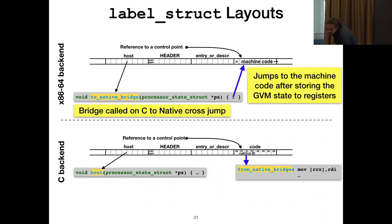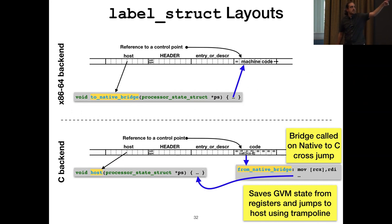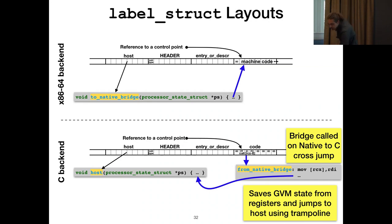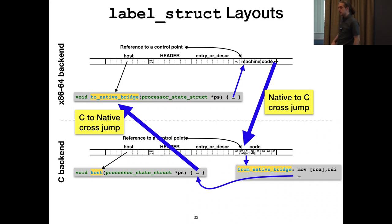When a native function is called from the trampoline, the host gets loaded by the trampoline and called — so the to-native-bridge is executed, which then jumps inside the machine code. When a C function is called from native code, execution jumps inside the code field, which executes the from-native-bridge, which can then move the processor state and resume execution using the trampoline. You can really go back and forth between the two — you can call C functions that do their own things and come back to native code later, with no limitation; you can even do tail calls that way.